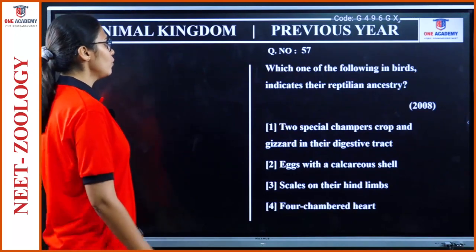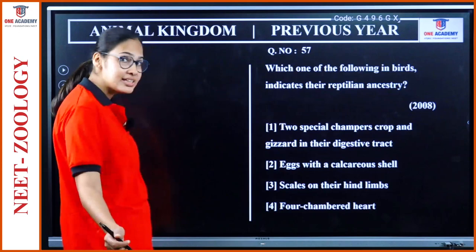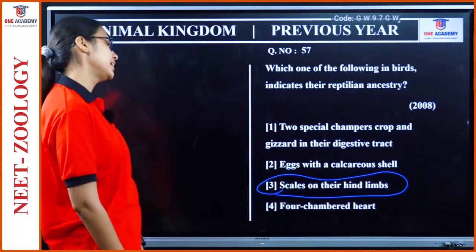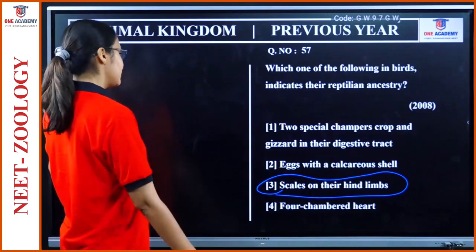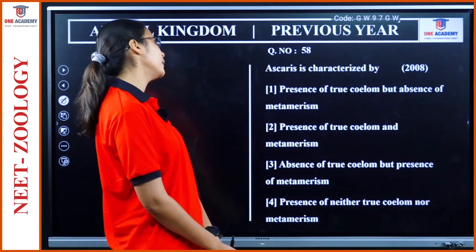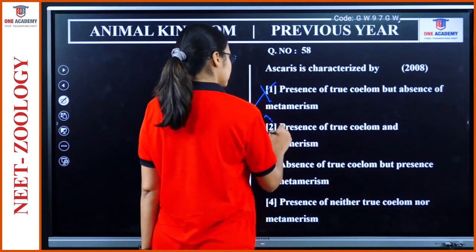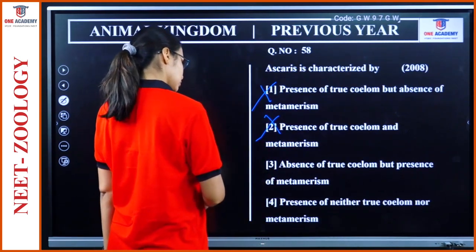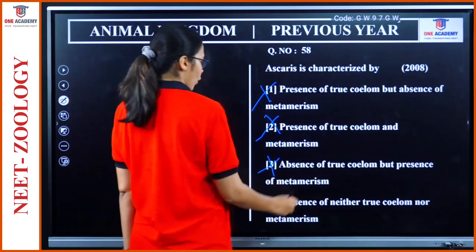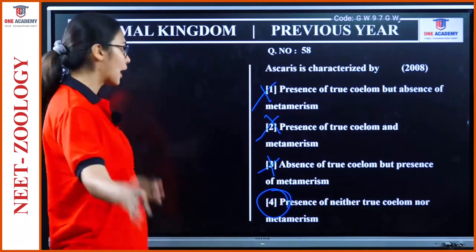Question 57: 'Which feature in birds indicates their reptilian ancestry?' Scales on their hind limbs indicate their reptilian ancestry. Question 58: Ascaris is characterized by — presence of neither true coelom nor metamerism; there is no true coelom and no metamerism in Ascaris.